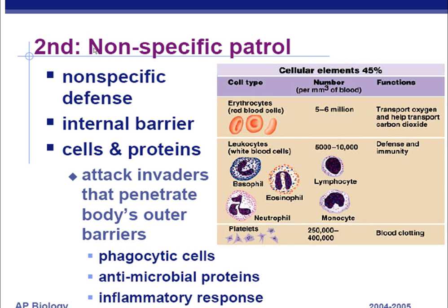That's the first line of defense — fairly simple. Now we're going to get more complicated. The second line of defense is a nonspecific patrol — white blood cells patrolling your body looking for invaders. It's nonspecific: if it finds any invader of any type not recognized as self, it's going to attack and destroy it. This is an internal barrier involving cells and proteins. We attack invaders that penetrate our body's outer defense. For example, if you get a cut and your first line of defense is breached, your second line kicks in. The first type of cell involved is called phagocytic cells — phago means to eat, cyto means cell — so phagocytic means cells that eat other things.